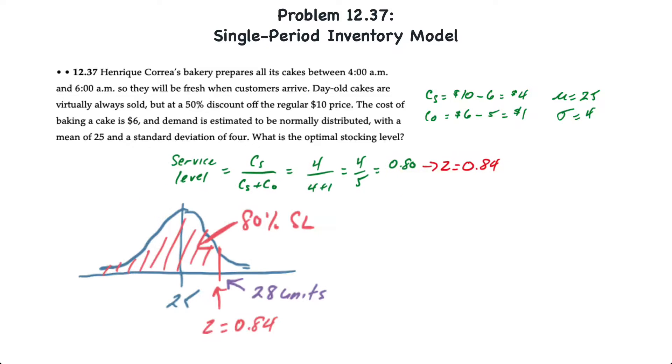If we draw what this looks like visually with a standard normal curve and a mean of 25, an 80% service level corresponds to a Z value of 0.84. And if we take 0.84 times the standard deviation of 4, that determines that the safety stock would be 3.36 units or 4 because you can't have a partial cake.